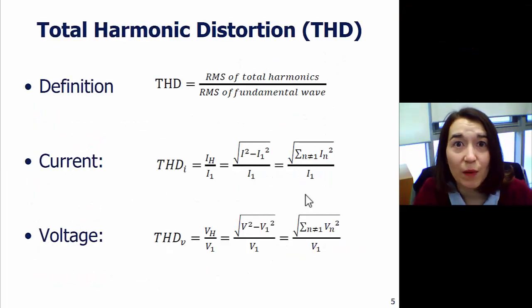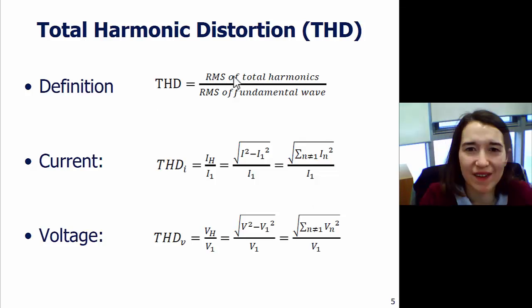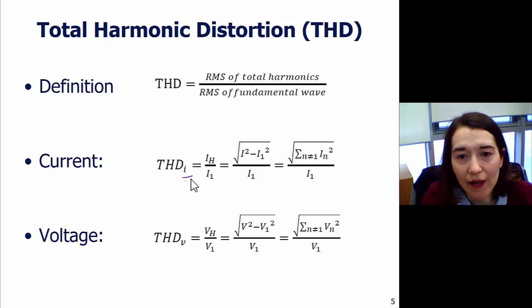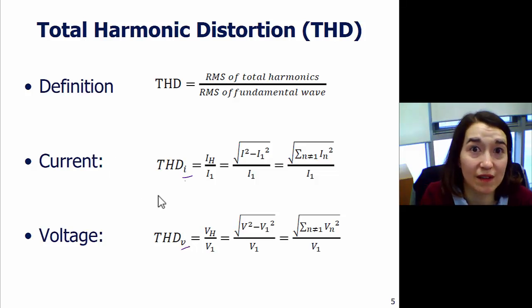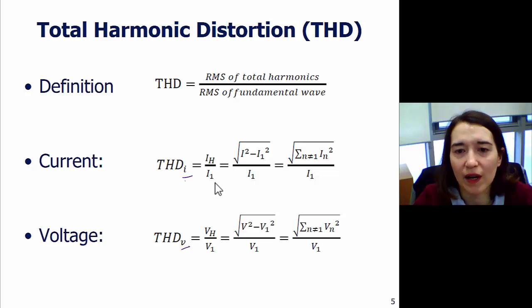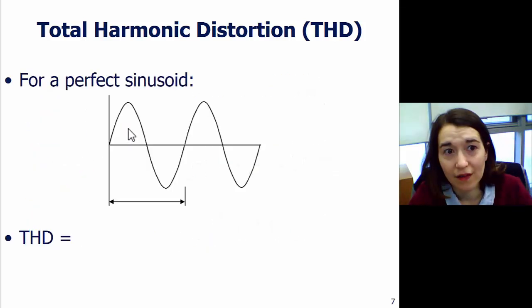To summarize, here's the total harmonic distortion definition, remember there's no units. Sometimes we put a little I or a little V here, just to help us remember if we're talking about current or voltage, because this is a unitless value. Here are the different ways you can think about it, harmonics over the base value, or the different ways to calculate that same value.